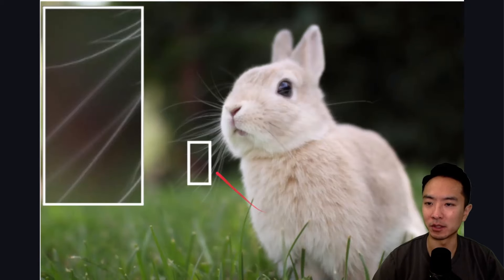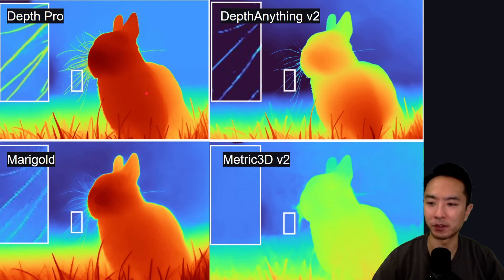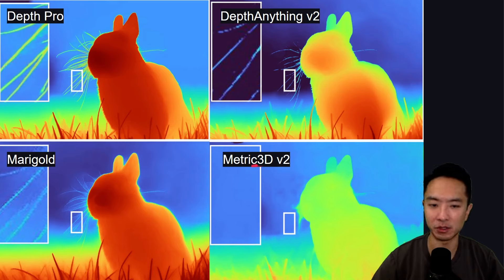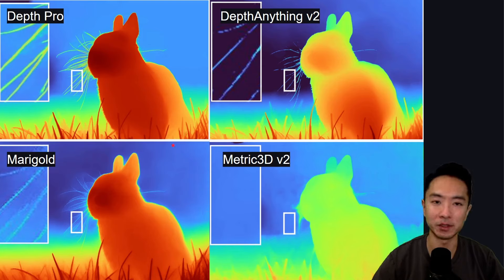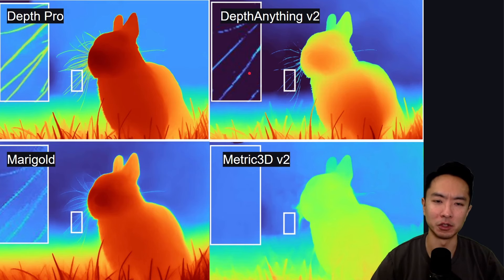Let's take a look at some detailed images. Here you can see a rabbit — notice the hair. Looking at the four different models, Depth Pro does very well capturing each strand of hair and the whiskers. Metric3D v2 barely catches anything, Marigold is kind of fuzzy, and the next best is DepthAnything v2. However, DepthAnything v2 is noted as being very good for translucent surfaces where Depth Pro actually struggles, so a lot of examples shown avoid translucent surfaces.